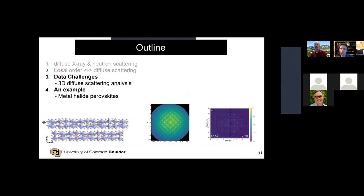So that's why local order actually matters as a material scientist, and it's something we need to be paying attention to. It's particularly important now as we start to deal with multi-component systems where we alloy in additional elements in battery spaces as well as a number of other physics and chemistry areas. I've talked about diffuse scattering mostly from the X-ray side, and local order. So now over the next 20 minutes or so I'll tell you about the data challenges and give a partial example from our metal halide perovskite work.